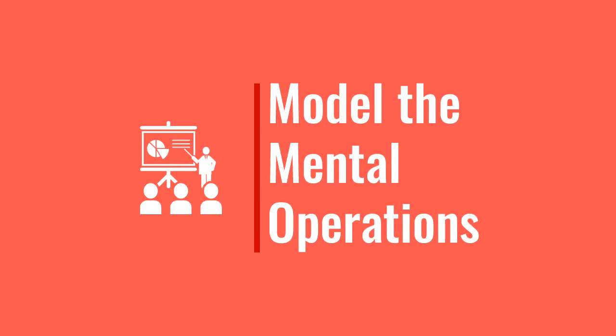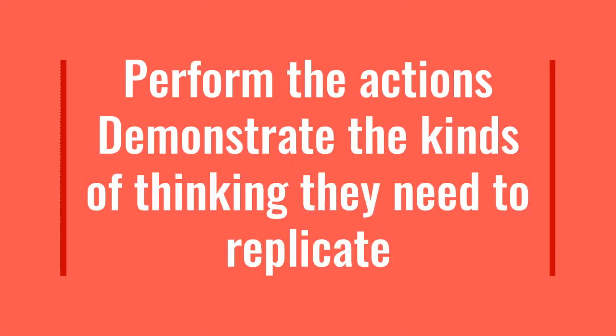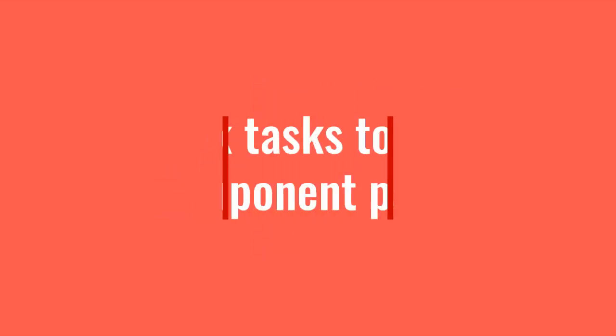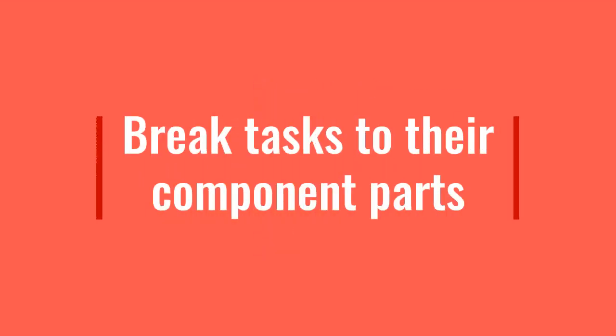The next step is to model for students what they need to do to overcome the bottlenecks. Perform the actions that students need to take, or demonstrate the kinds of thinking that they need to replicate. Make all of the steps in the process visible. This may involve breaking big tasks down into their component parts.